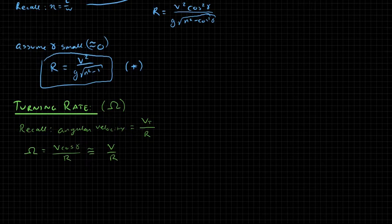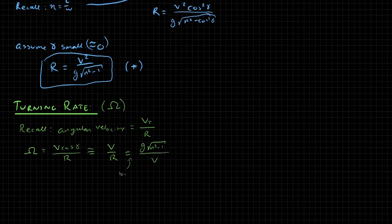Now let's assume that the climb angle is small, so this comes out to be approximately V over R. And now we have an equation for R, and it has a V squared in it. So if we do V over R, what we'll come up with is, just by plugging that in, will be G root N squared minus 1 divided by V. And this is by star, where star is shown here.